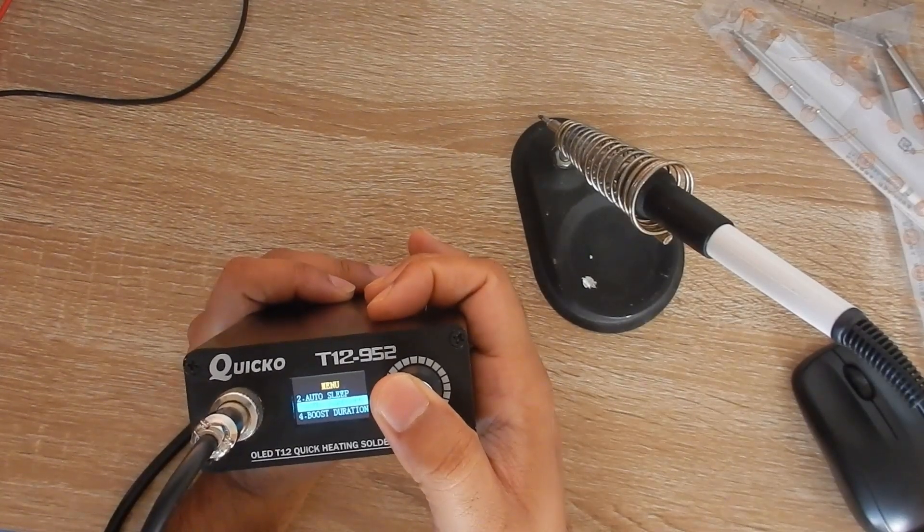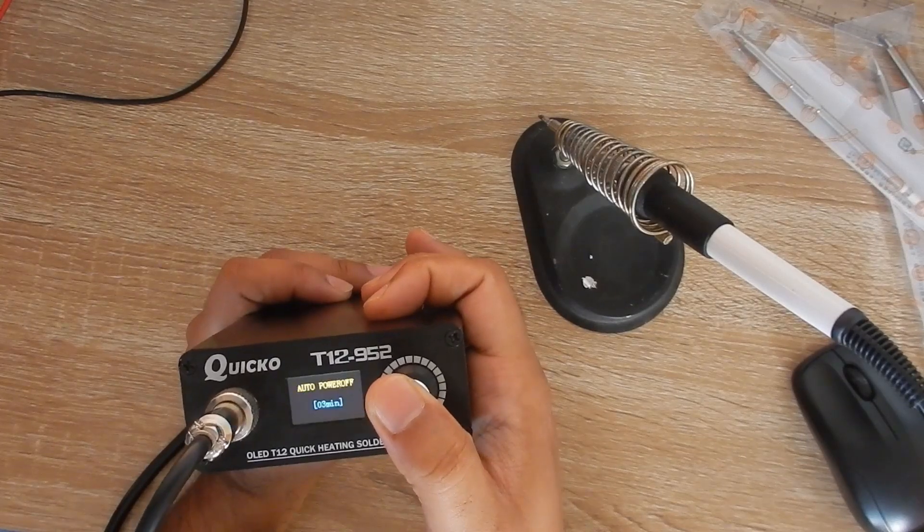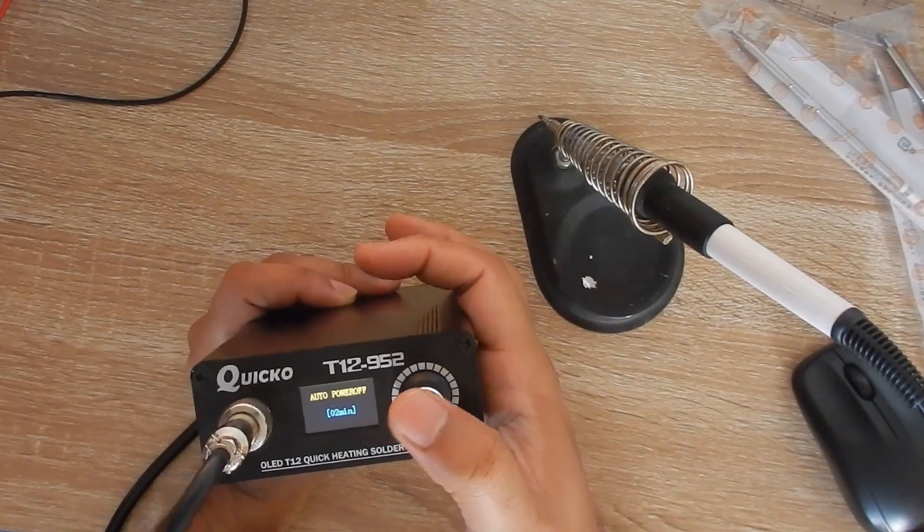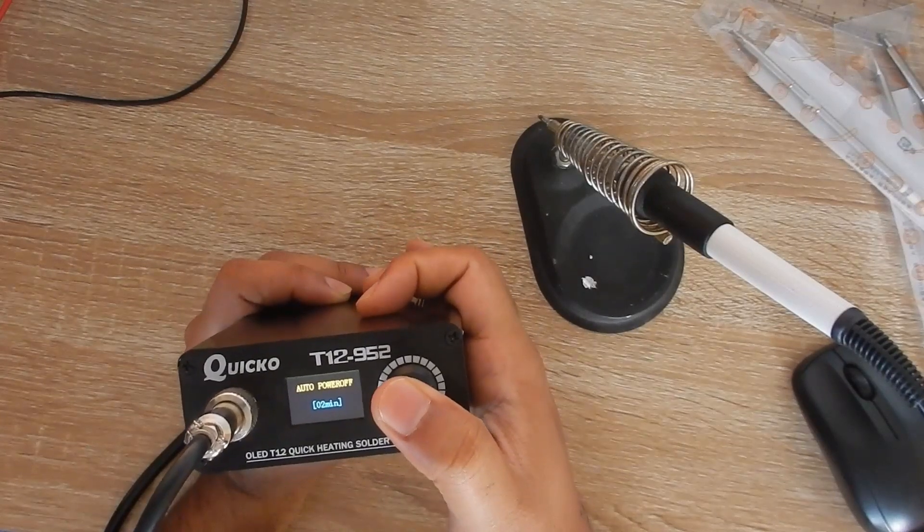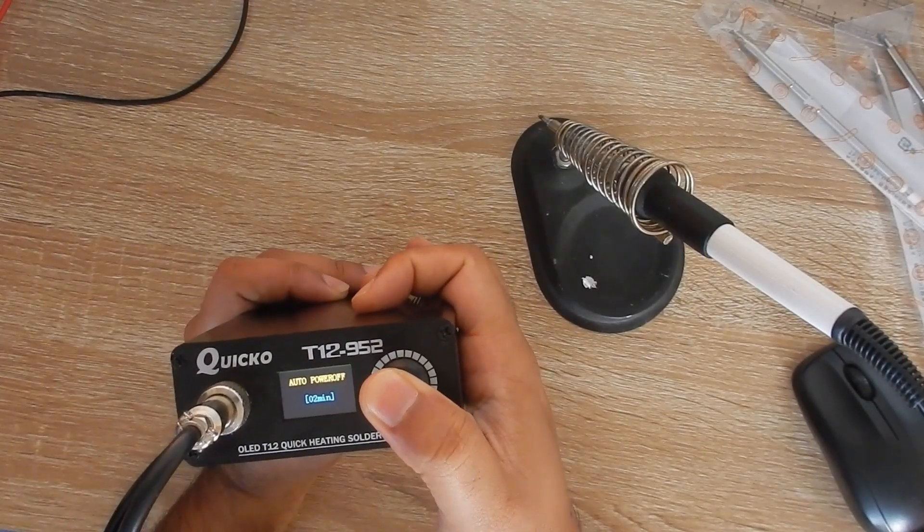Let's change the auto power off setting. Press the knob to go into the setting and change the value. After you have done just press and hold the knob to save the setting.